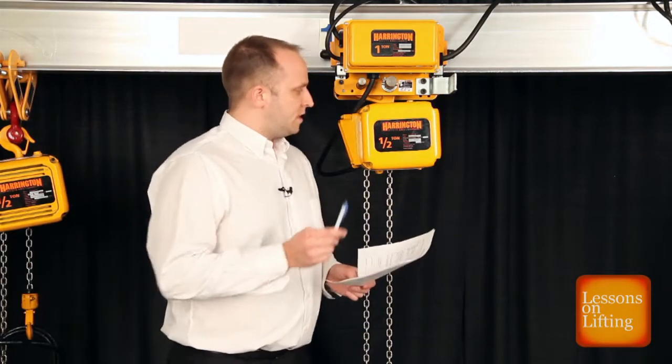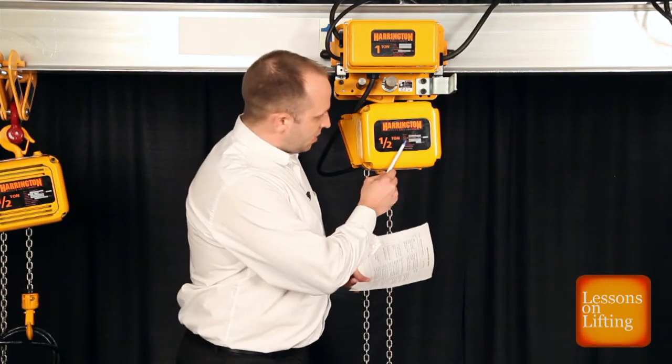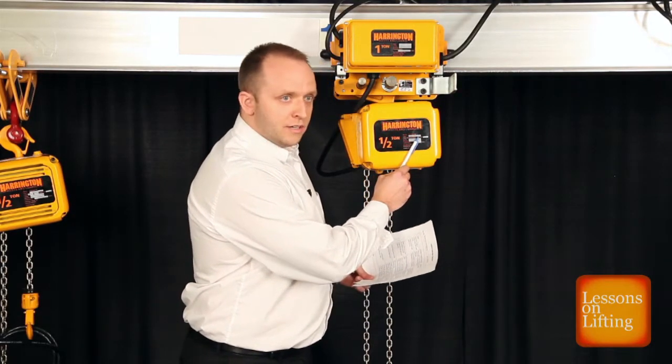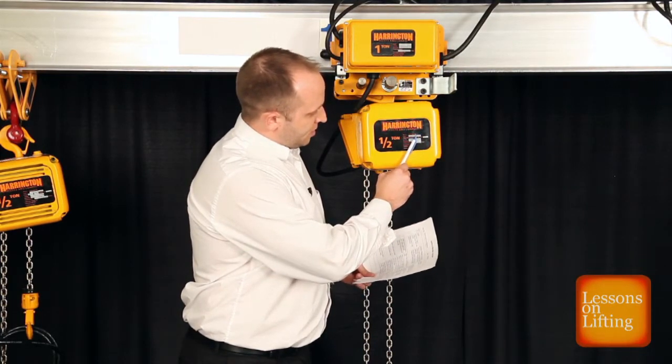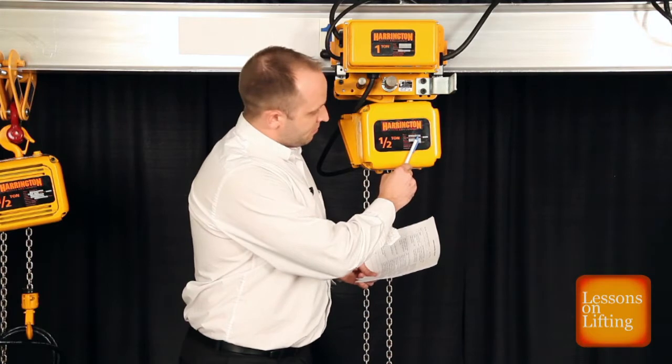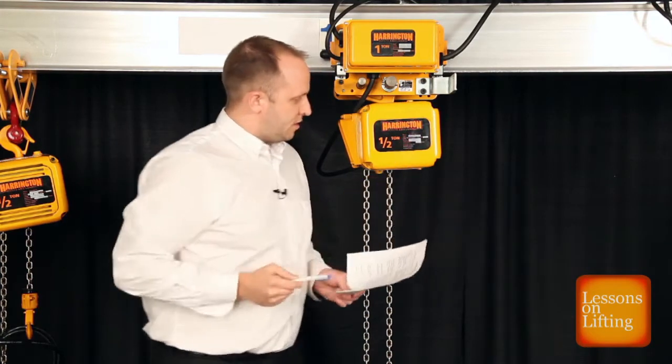One way you can tell if it's single or dual-speed is to take a look at the product code on the hoist cover. Right after the numerical description, there's a letter designator. If it's a single letter, that tells you that you have a single-speed unit and a voltage change is possible.